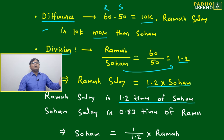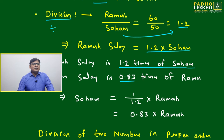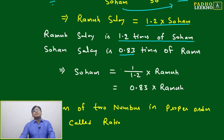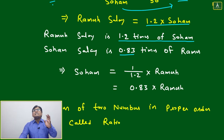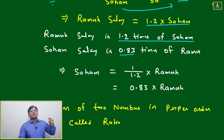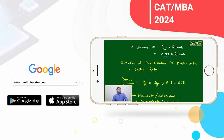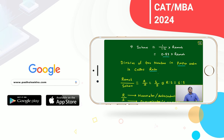In reverse: dividing 1 by 1.2 gives 0.83, so Shoham's salary is 0.83 times Ramesh's. Multiplying by 100 gives the percentage — since 'cent' means 100 — so Shoham's salary is 83% of Ramesh's, and Ramesh's salary is 120% of Shoham's. The division of two numbers in proper order is called a ratio.